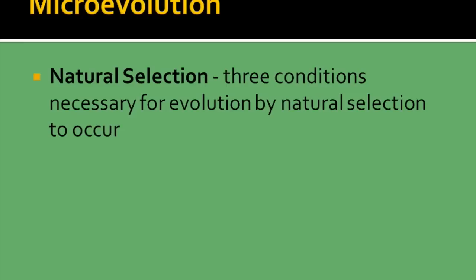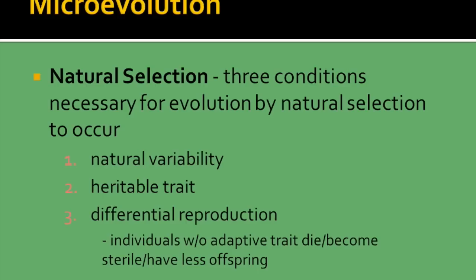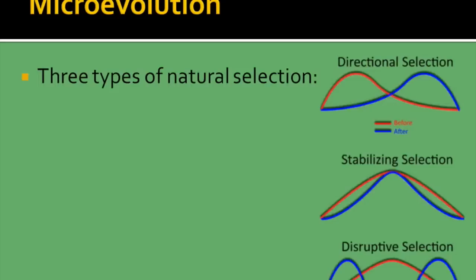Natural selection has three conditions necessary for evolution by natural selection to occur: there must be natural variability, there needs to be a heritable trait, and there has to be differential reproduction. The individuals without the adaptive trait are going to die or become sterile, so they'll have fewer offspring and that trait will eventually go away.